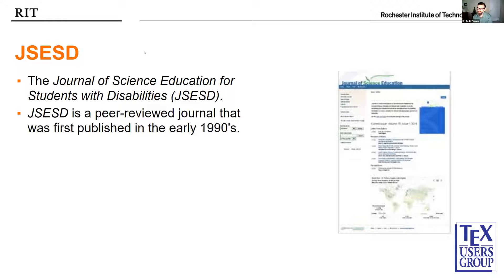JSESD is a peer-reviewed journal, first published in the 1990s. All editing and management of the journal is done on a shoestring budget — in fact, there's really no budget at all — but we do try to be a leader in the field of science education for students with disabilities.